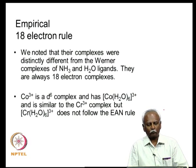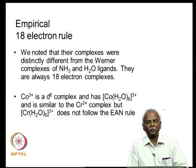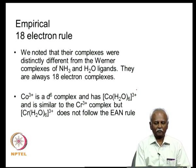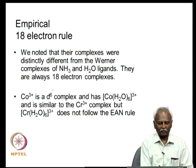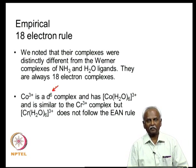The 18 electrons are generated by adding the number of electrons around the metal to the total number of electrons donated by the ligands. In Werner's coordination chemistry, you do not have this strict following of 18 electrons around the valence shell. For example, cobalt(3+) has 6 valence electrons — it is a d6 complex.